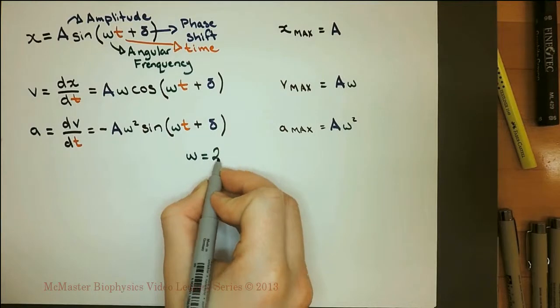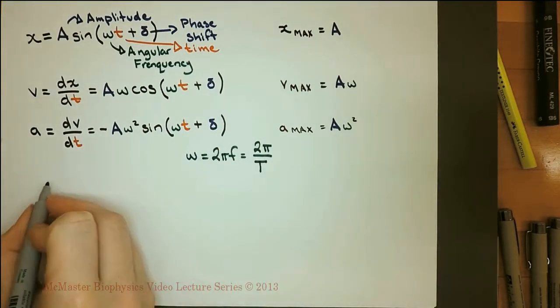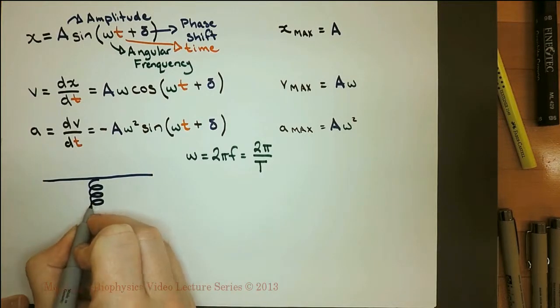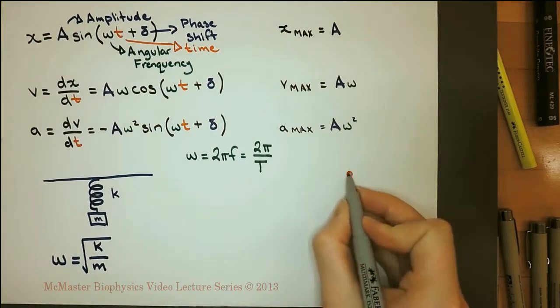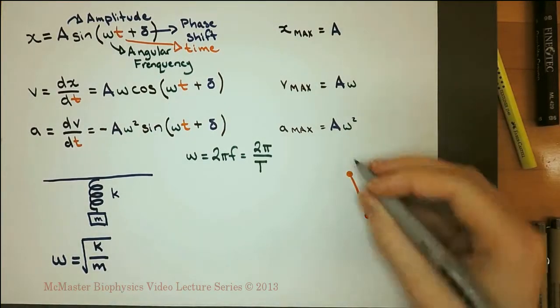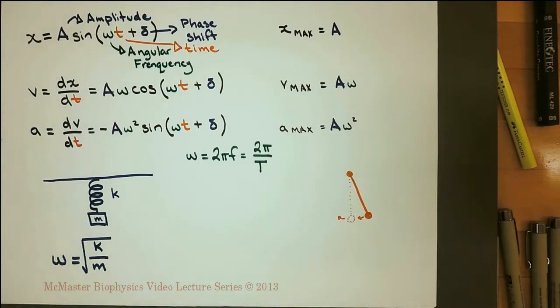The angular frequency can be calculated using the period or frequency of the oscillation. The angular frequency of a mass on a spring can be calculated using the mass and the spring constant. The angular frequency of a pendulum can be calculated with the length and gravitational acceleration. Note that the mass does not affect the movement of a pendulum.